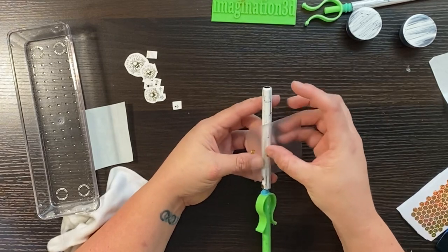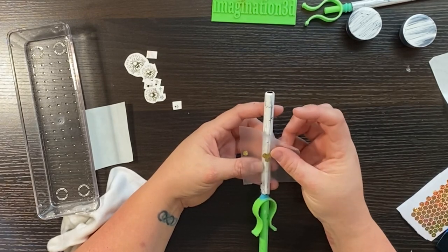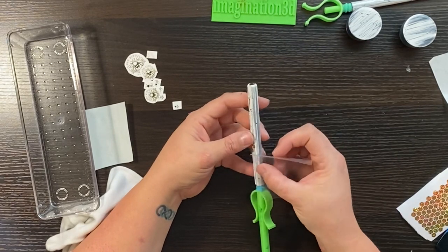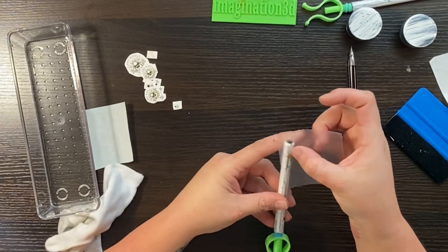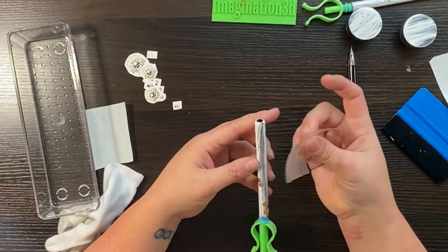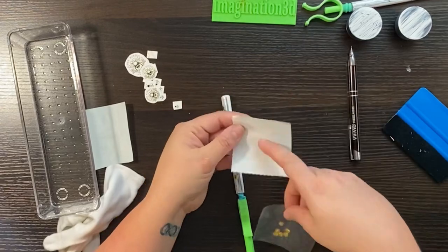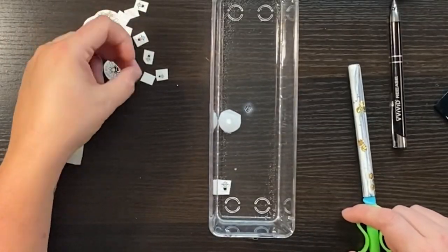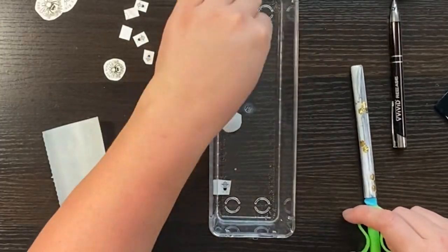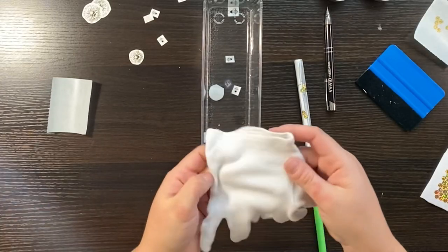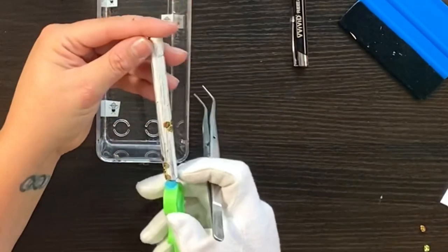Basically whatever sticks to the pin stays on the pen. But if you have more of a pattern you want to go with, you might want to stick with that. Don't ever force a water slide to release the backing. When it's ready, it will slide completely off the backing easily.